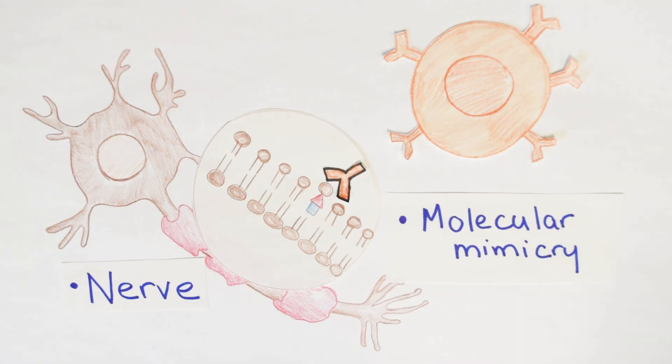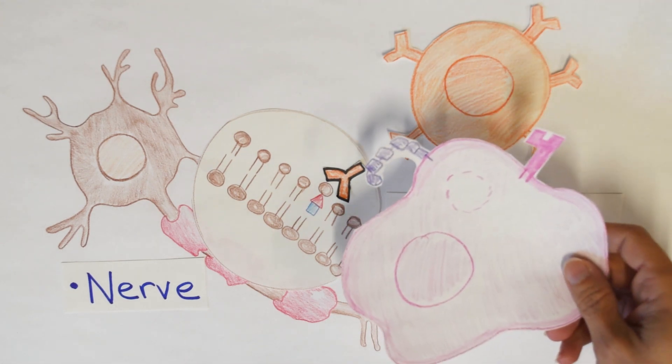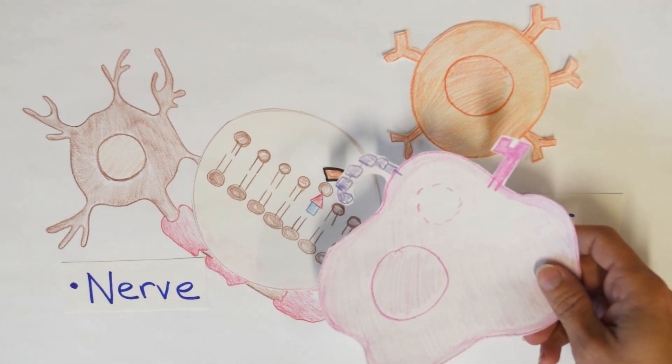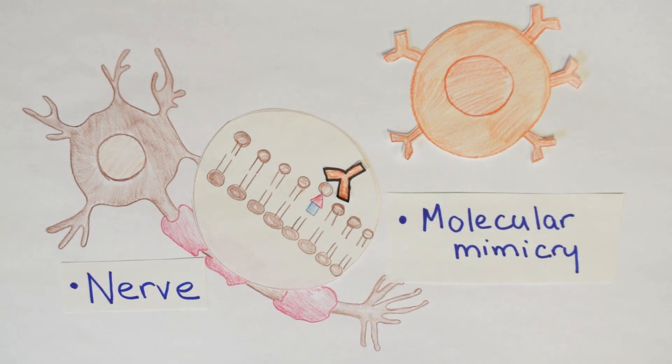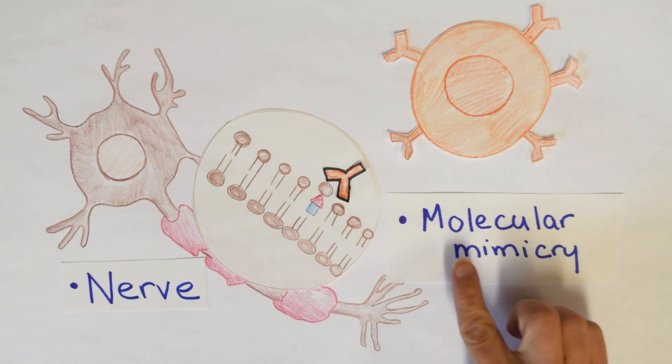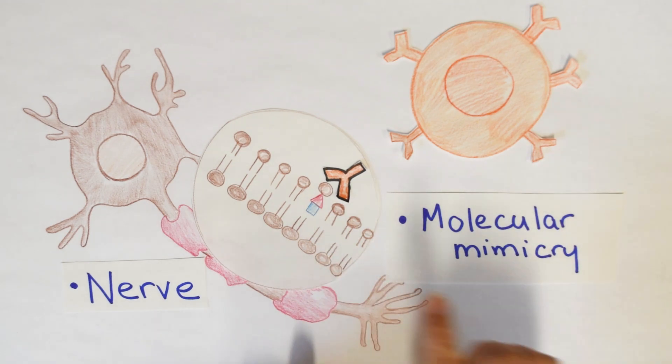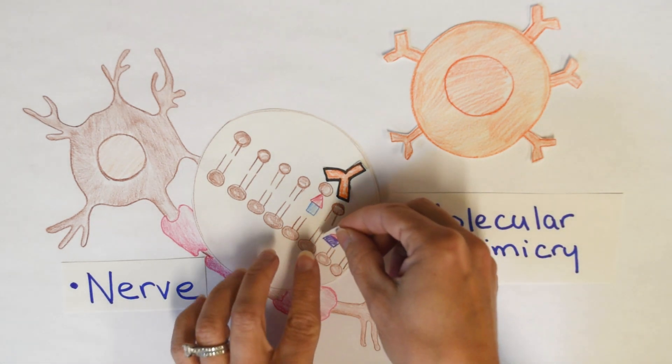All right. So remember what happens when there's antibodies? That means macrophages come along. The macrophage is going to come along, see the antibodies, and start to eat the Schwann cells, eat the myelin, break down those nerves. And without nerves, you can't move. All because of molecular mimicry.